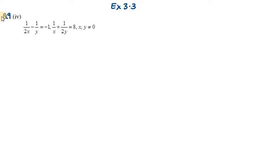As you can see, it is given here that we have 1 over 2x minus 1 over y equals minus 1, and we have 1 over x plus 1 over 2y equals 8. Here it is given that x and y are not equal to 0.